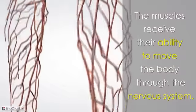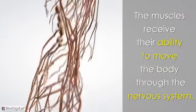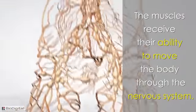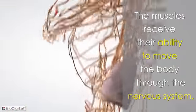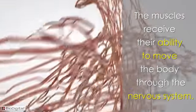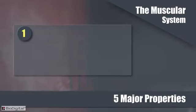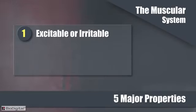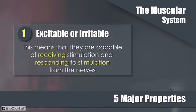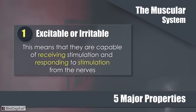The primary purpose of the muscular system is to provide movement for the body. These muscles receive their ability to move through the nervous system. There are five major properties to the muscular system. Number one: muscles are excitable or irritable, meaning they are capable of receiving and responding to stimulation.